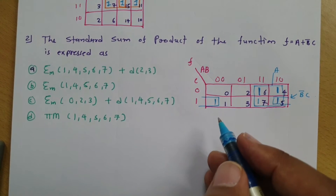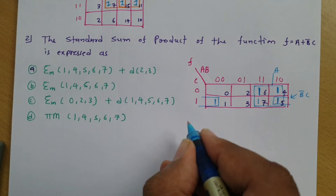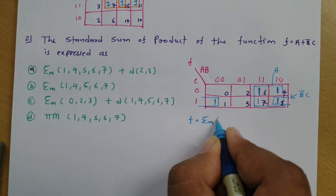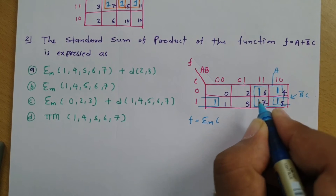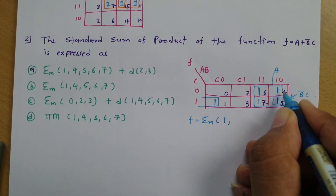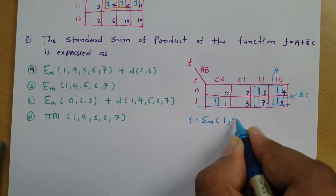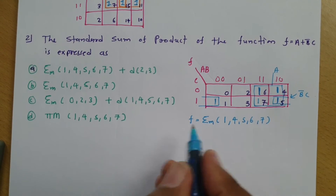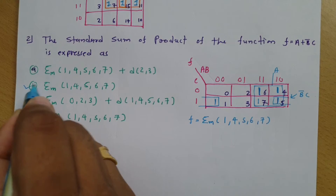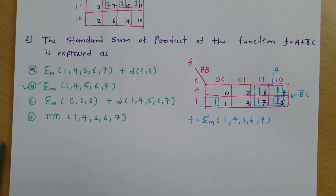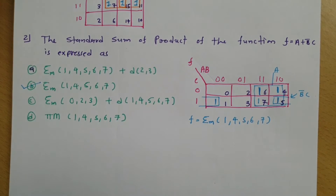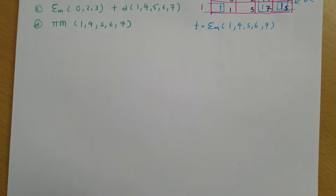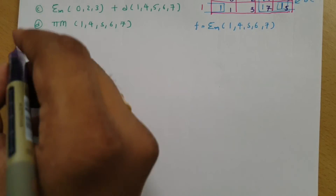Now expressing this function f in terms of minterms, you can see the 1s are at positions 1, 4, 5, 6, and 7. Therefore the correct option for this question is option B.